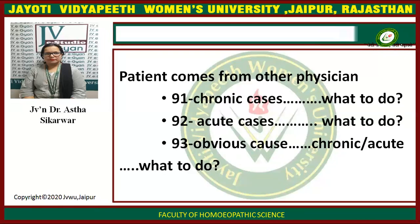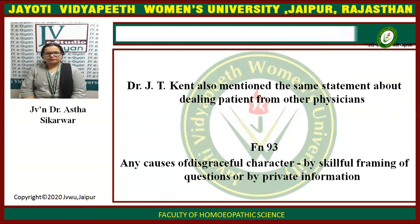Aphorisms 91 to 93 deal with the patient coming from other physicians: 91 chronic cases what to do; 92 acute cases what to do; 93 obvious cause chronic or acute what to do. Dr. J.T. Kent also mentioned the same statement about dealing with patients from other physicians. Footnote 93: any causes of this delicate character by skillful framing of questions or by private information.